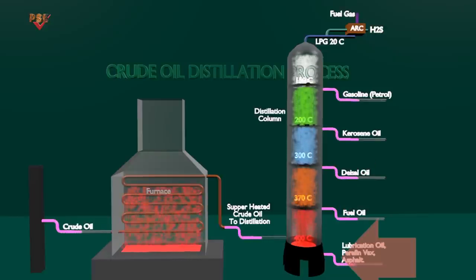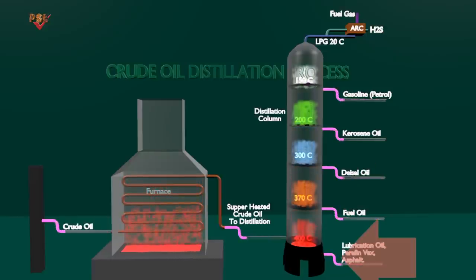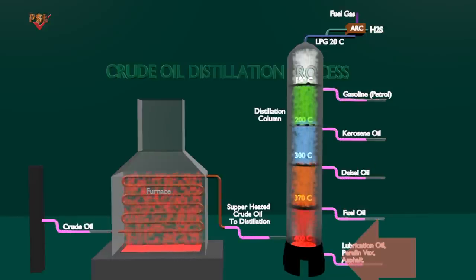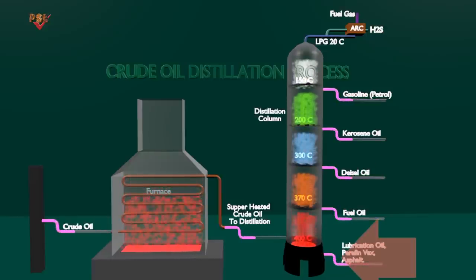At the lowest end of the columns, the products include asphalt, power generation fuel, and marine fuel.